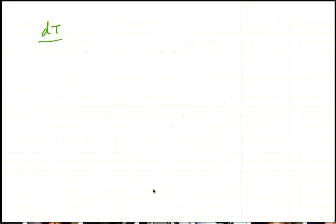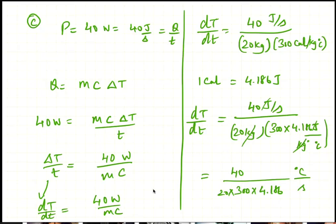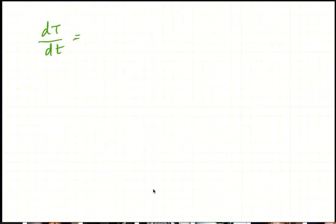So dT by dt, and 60 seconds is one minute. So 40 divided by 20 into 300 into 4.186 into 60 seconds divided by one minute. Now we're all set. This is 0.1 degrees Celsius per minute.